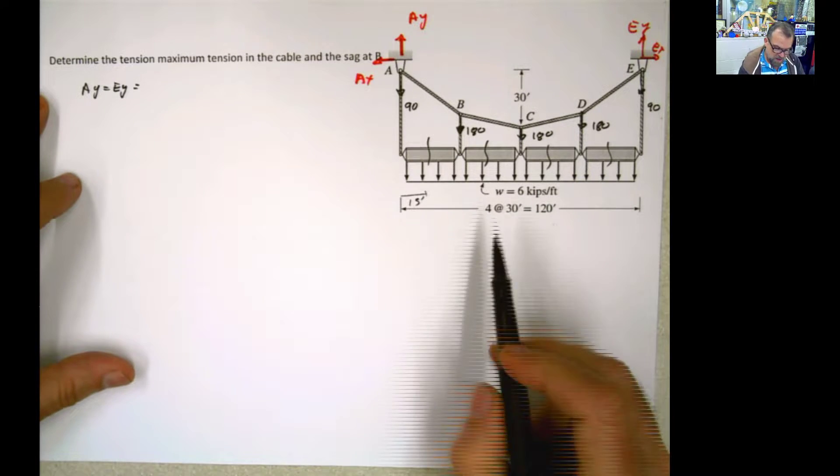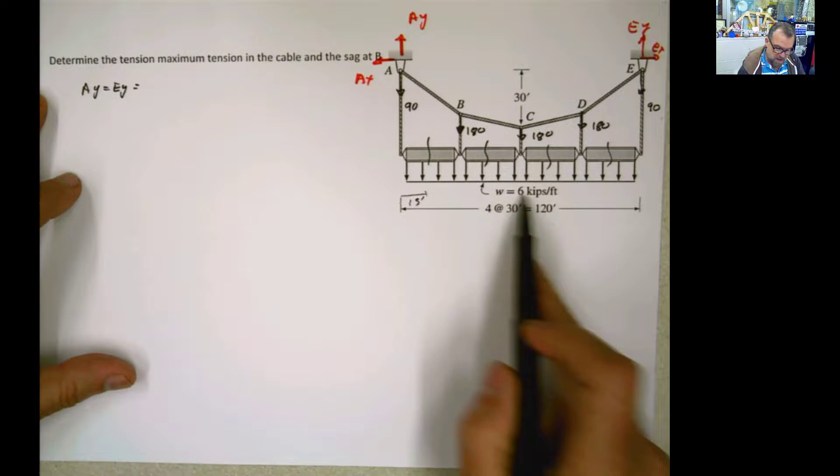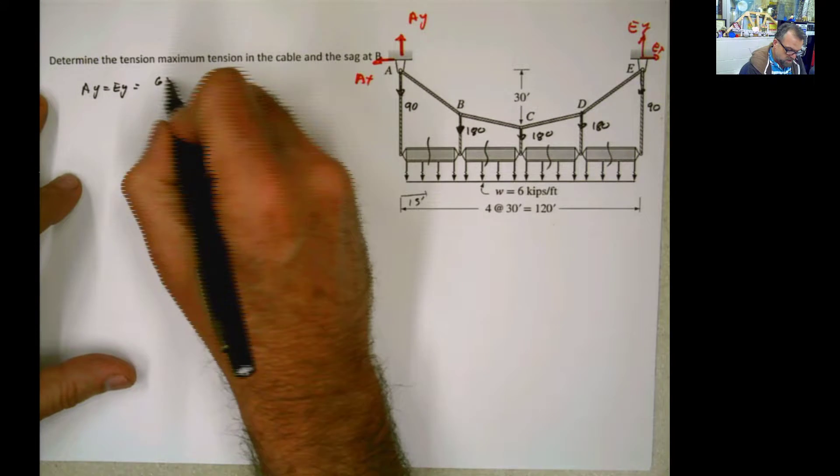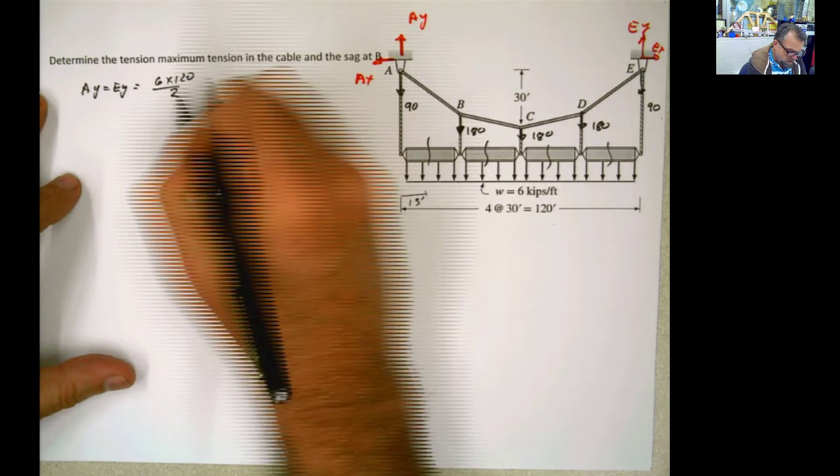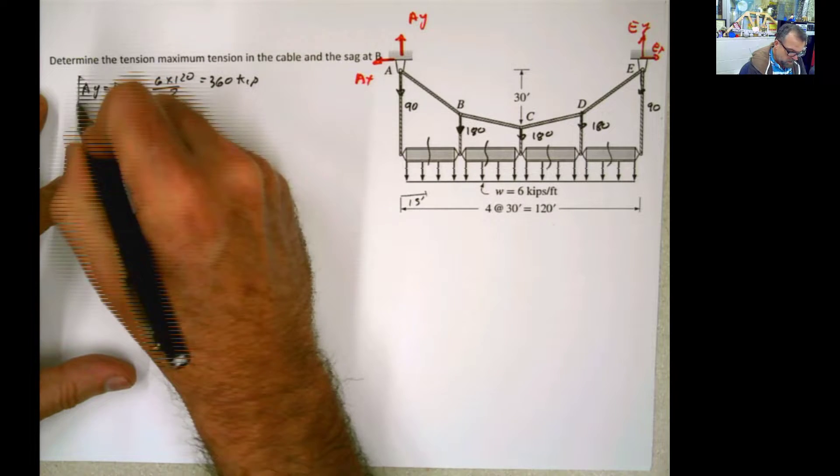Well, per symmetry, we can say that Ay and Ey are the same. And we can say that it's a summation of all of these loads. But it's the same thing as saying this is 6 times 120 divided by 2, and that's 360 kilo. There you go.